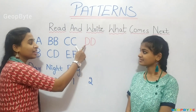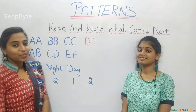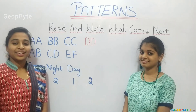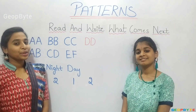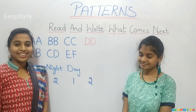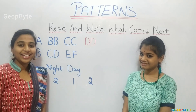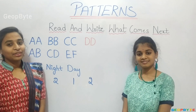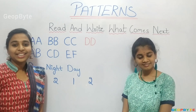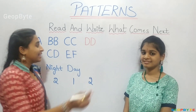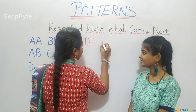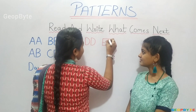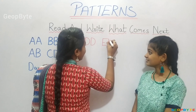After D, D, D, what comes? Let us see. A, B, C, D, E — after the alphabet D, we get the alphabet E. Let us write E, E.